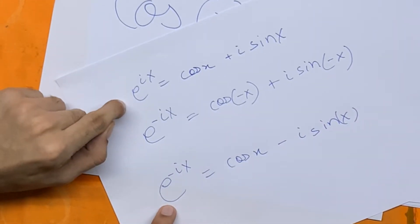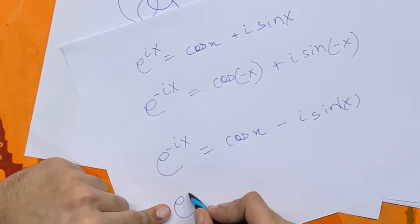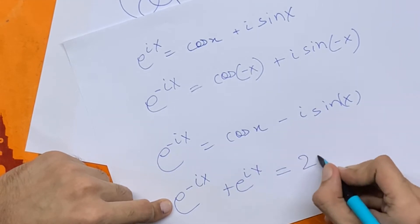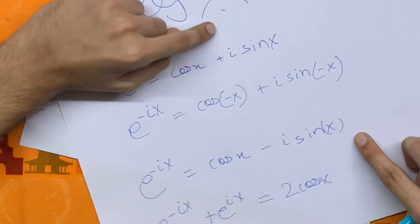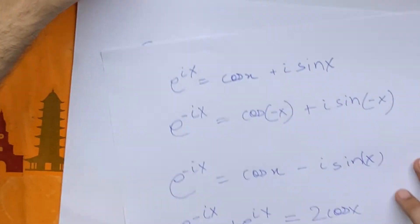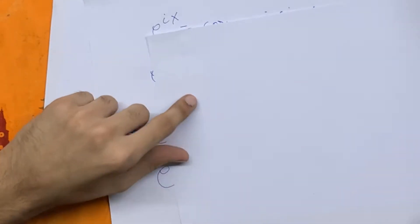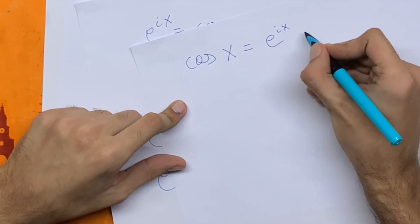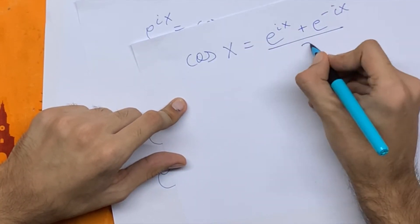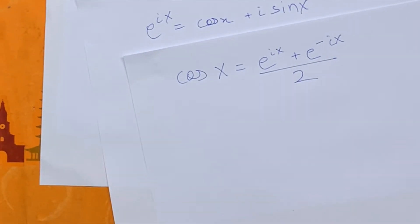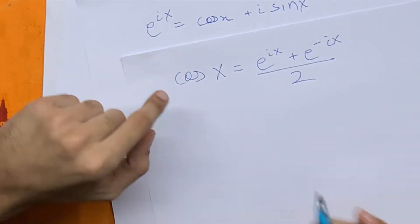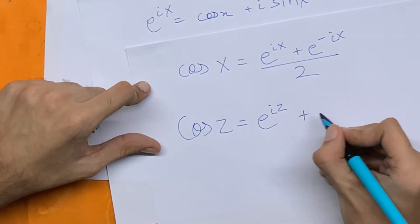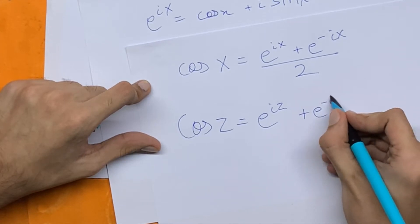Now if we add these two equations together, we'll have e to the power ix plus e to the power minus ix is equal to 2 cos x, because the imaginary parts are exactly the same magnitude but opposite sign and they cancel out. Moving on, we have cos x is equal to e to the power ix plus e to the power minus ix upon 2. But since we're looking at complex numbers, let's replace x with z, giving us cos of z is equal to e to the power iz plus e to the power minus iz upon 2.